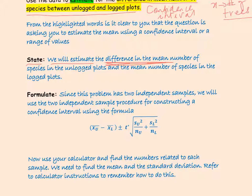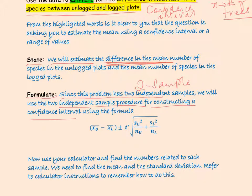The next step in our four-step process is Formulate — thinking through exactly which method you're going to use and briefly stating what you're thinking. Since this problem has two independent samples, we identify it as a two independent sample problem, and we'll use the two independent sample procedure to construct a confidence interval.